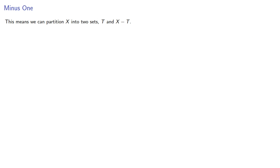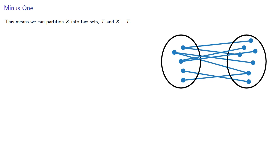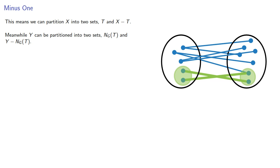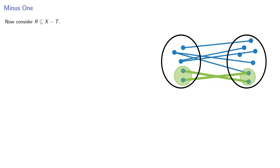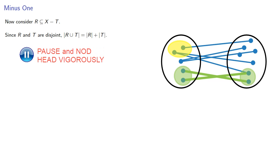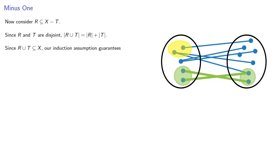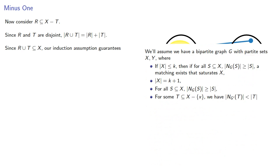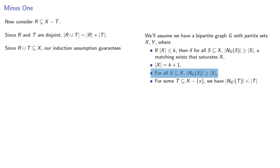Let's draw a picture to help organize our thoughts. We can partition x into two sets, t and the rest of it, where the neighborhood of t has the same cardinality as t. Meanwhile, y can be partitioned into the neighborhood of t and the rest of it. There is a matching between t and its neighborhood. Now consider a subset r of x minus t. Since r and t are disjoint, the cardinality of the union is just the sum of the individual cardinalities. Since the union is still a subset of x, our induction assumption guarantees that the neighborhood of the union has cardinality greater than the sum of the cardinalities.